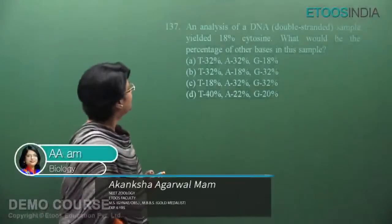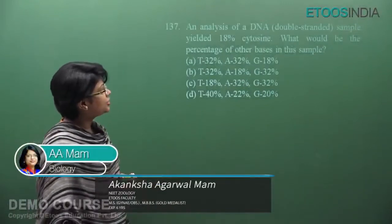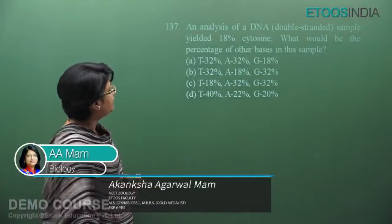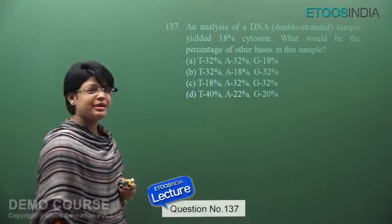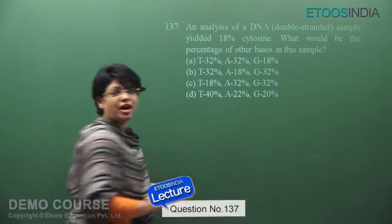Let us see the next question students, question 137. An analysis of a DNA double-stranded sample yielded 18% cytosine. What would be the percentages of other bases in the sample? Here we have to apply Chargaff's Rule.